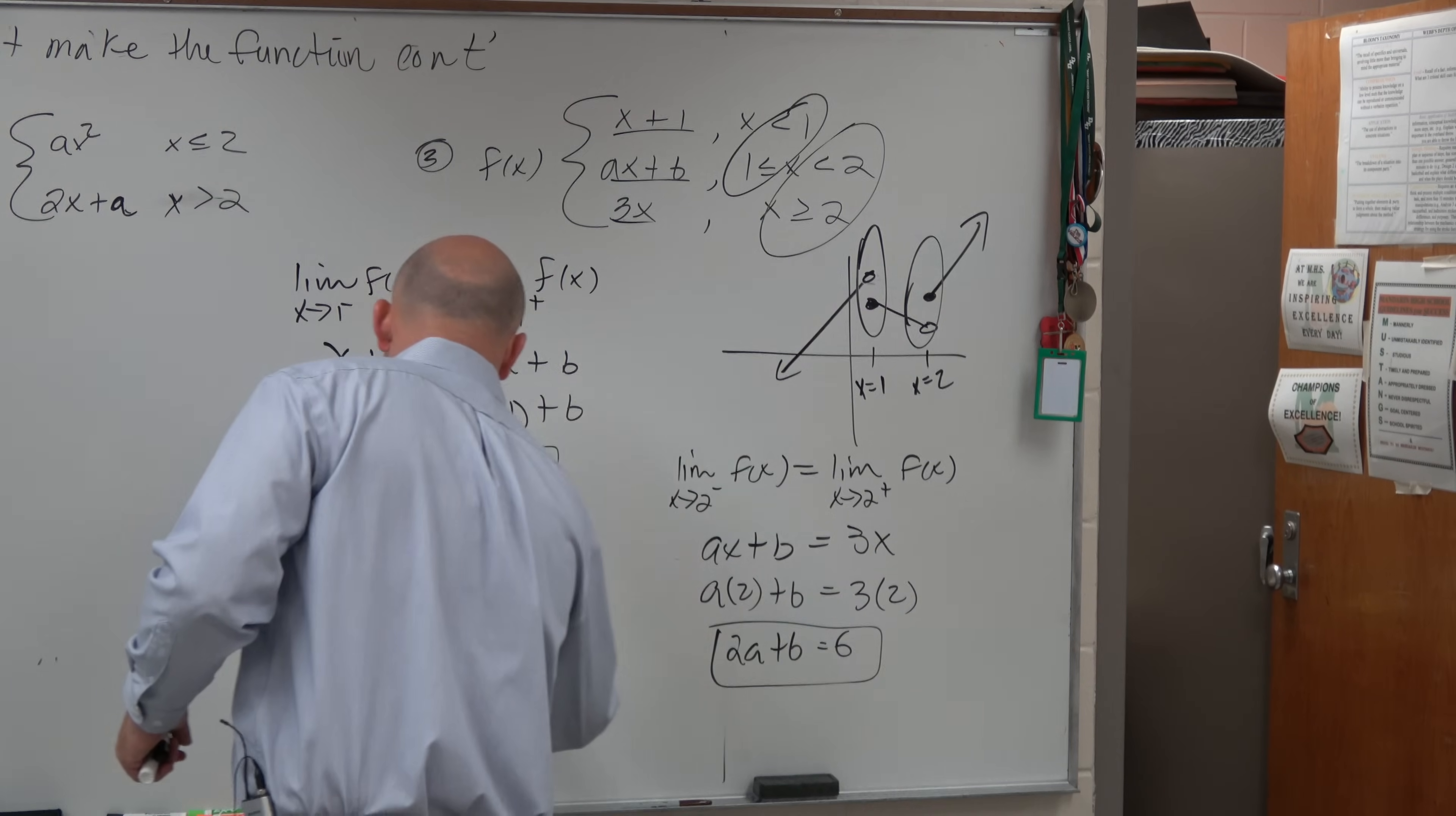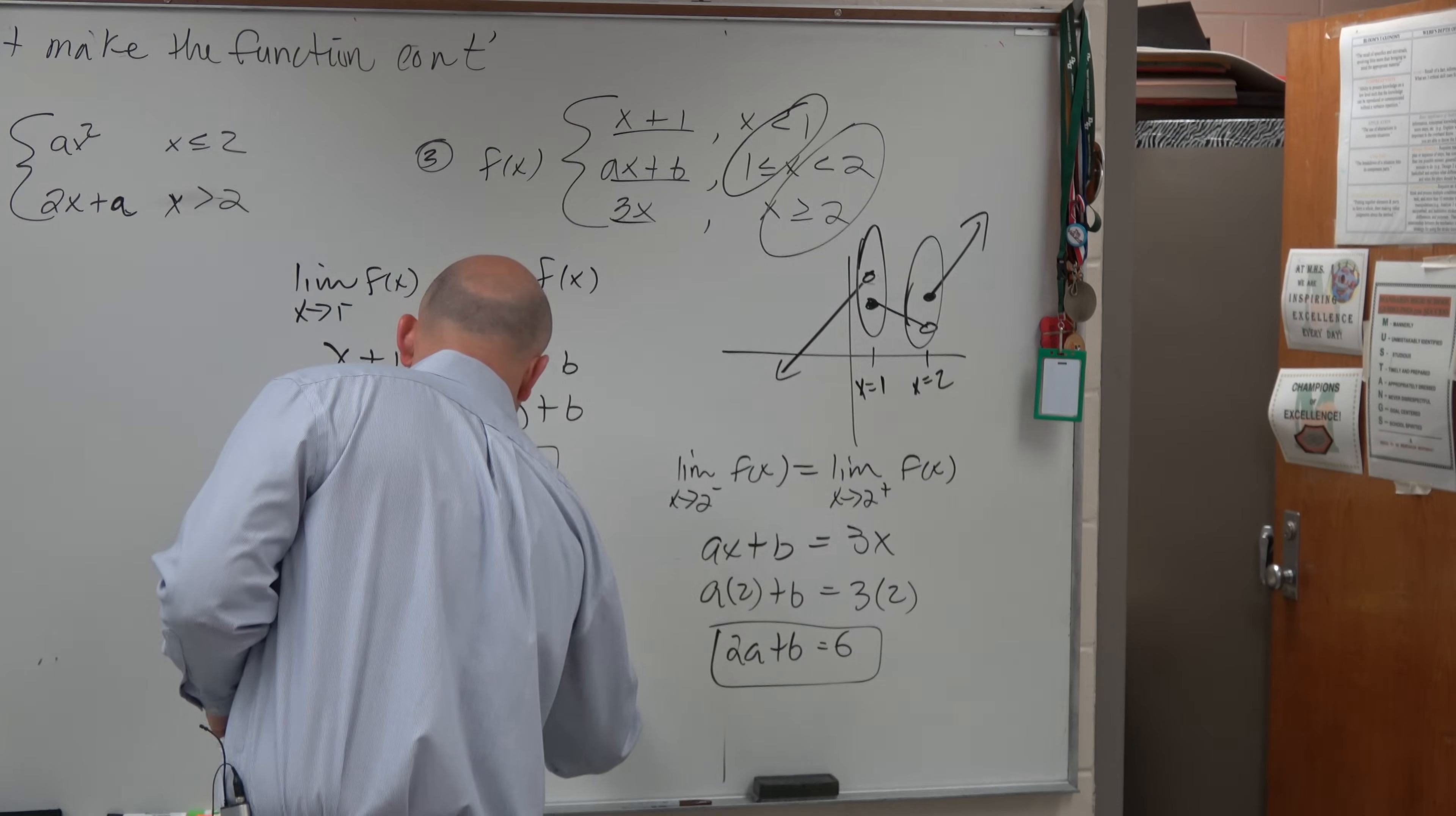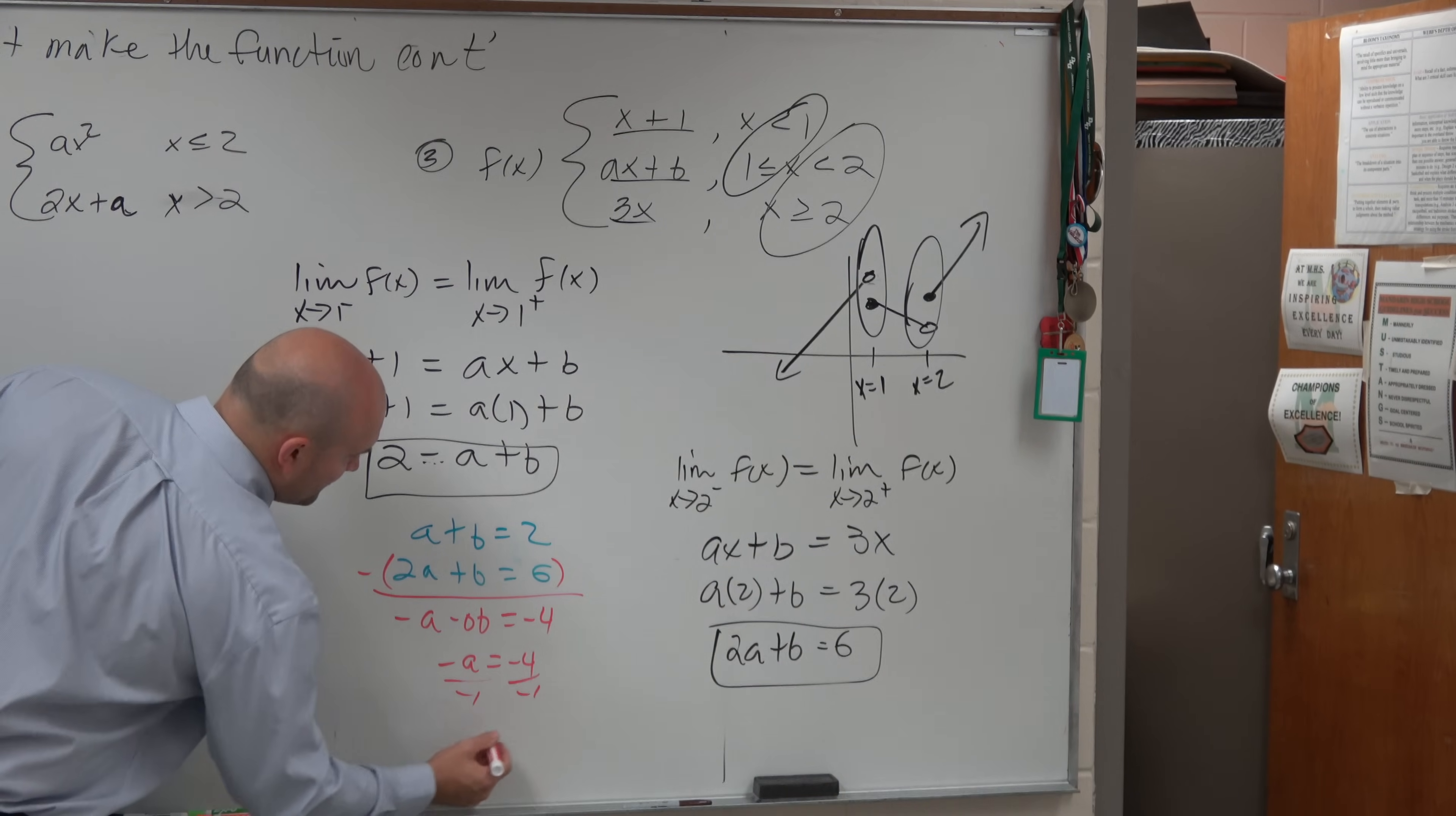And then I'm going to use elimination. So what I'm going to do is I'm going to subtract the two. So by subtracting the two equations from one another, I get negative a minus 0b equals negative 4. So it's negative a equals negative 4. Divide by negative 1, a equals 4.